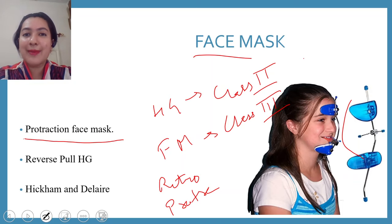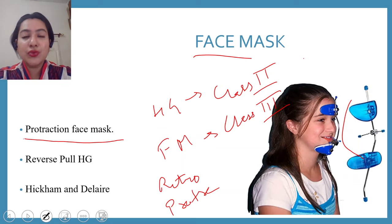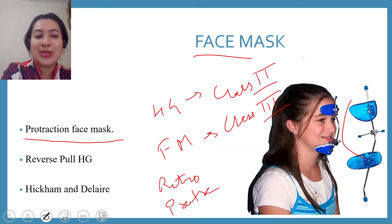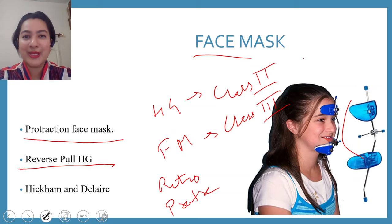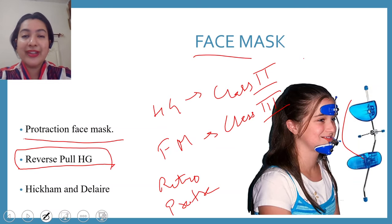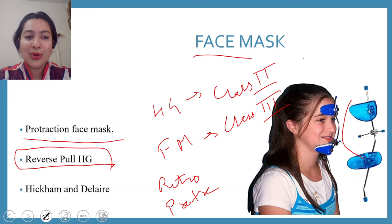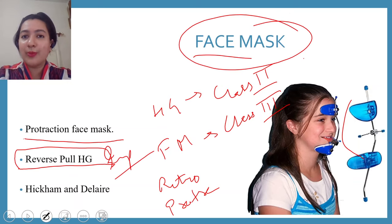The name for face mask is 'protraction face mask' because it is used to protract the maxilla — to bring the maxilla forward into an orthognathic position. Since its use is exactly opposite to that of headgear, it is also known as 'reverse pull headgear.' Headgear distalizes the maxilla, whereas face mask protracts it. In an MCQ from 2014 or 2015, students were asked about reverse pull headgear and confused it with headgear — remember, reverse pull headgear means face mask.